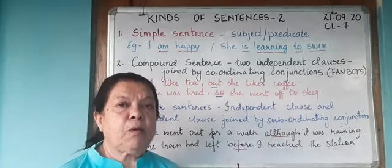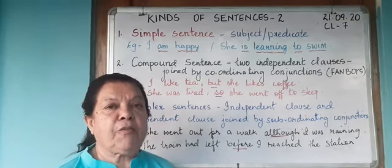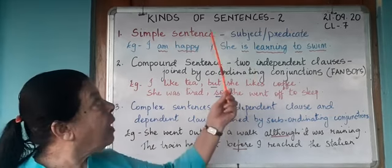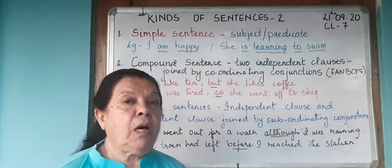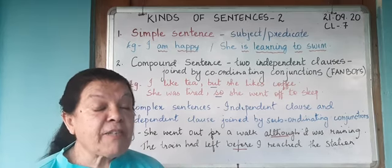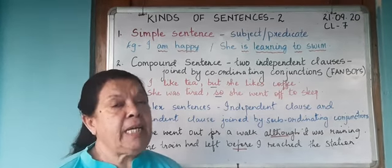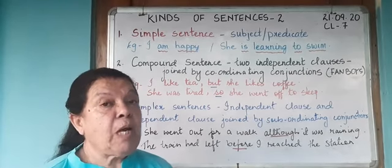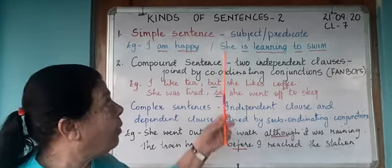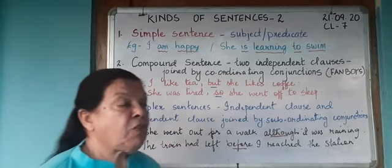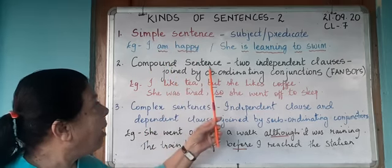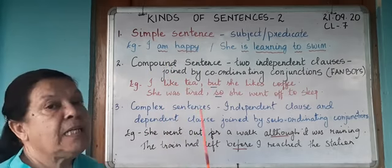Good afternoon students and welcome back to yet another class of English grammar. If you remember, in our last class we did kinds of sentences where we saw what are declarative sentences, what are interrogative sentences, imperative sentences, and exclamatory sentences. In today's class we will continue with kinds of sentences and see what is a simple sentence, what is a compound sentence, and what is a complex sentence.